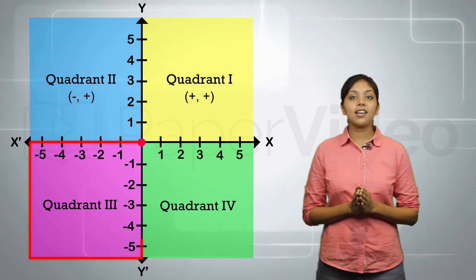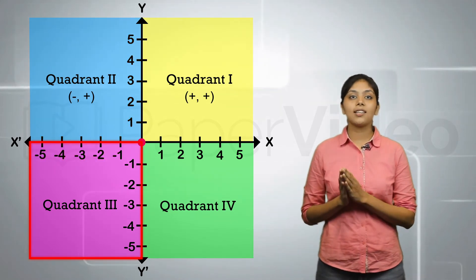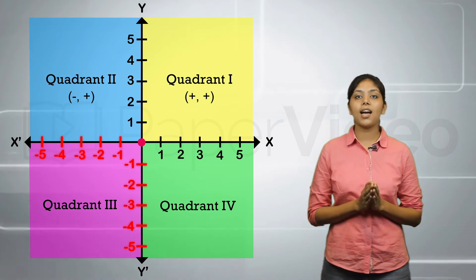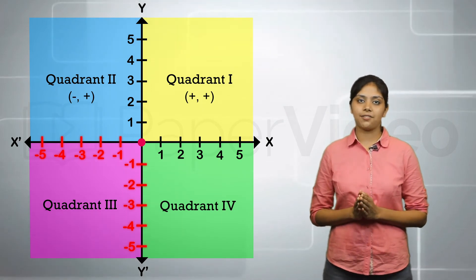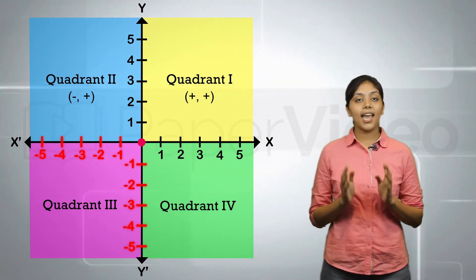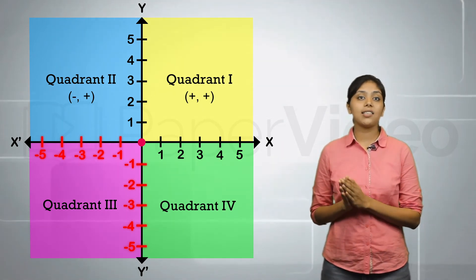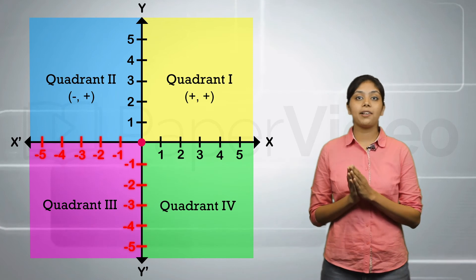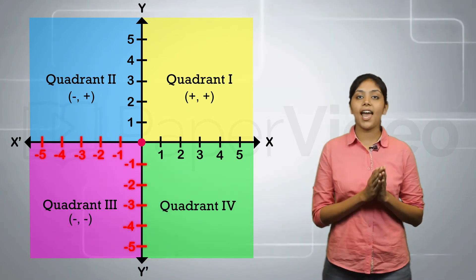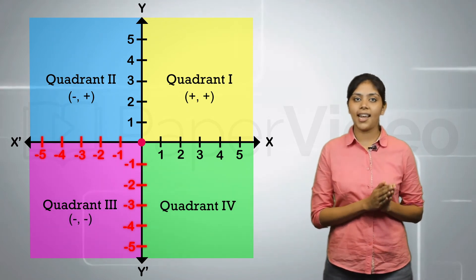In the third quadrant, the x-coordinate and the y-coordinate are both negative. This means that any point lying in the third quadrant will have both its abscissa and ordinate negative.